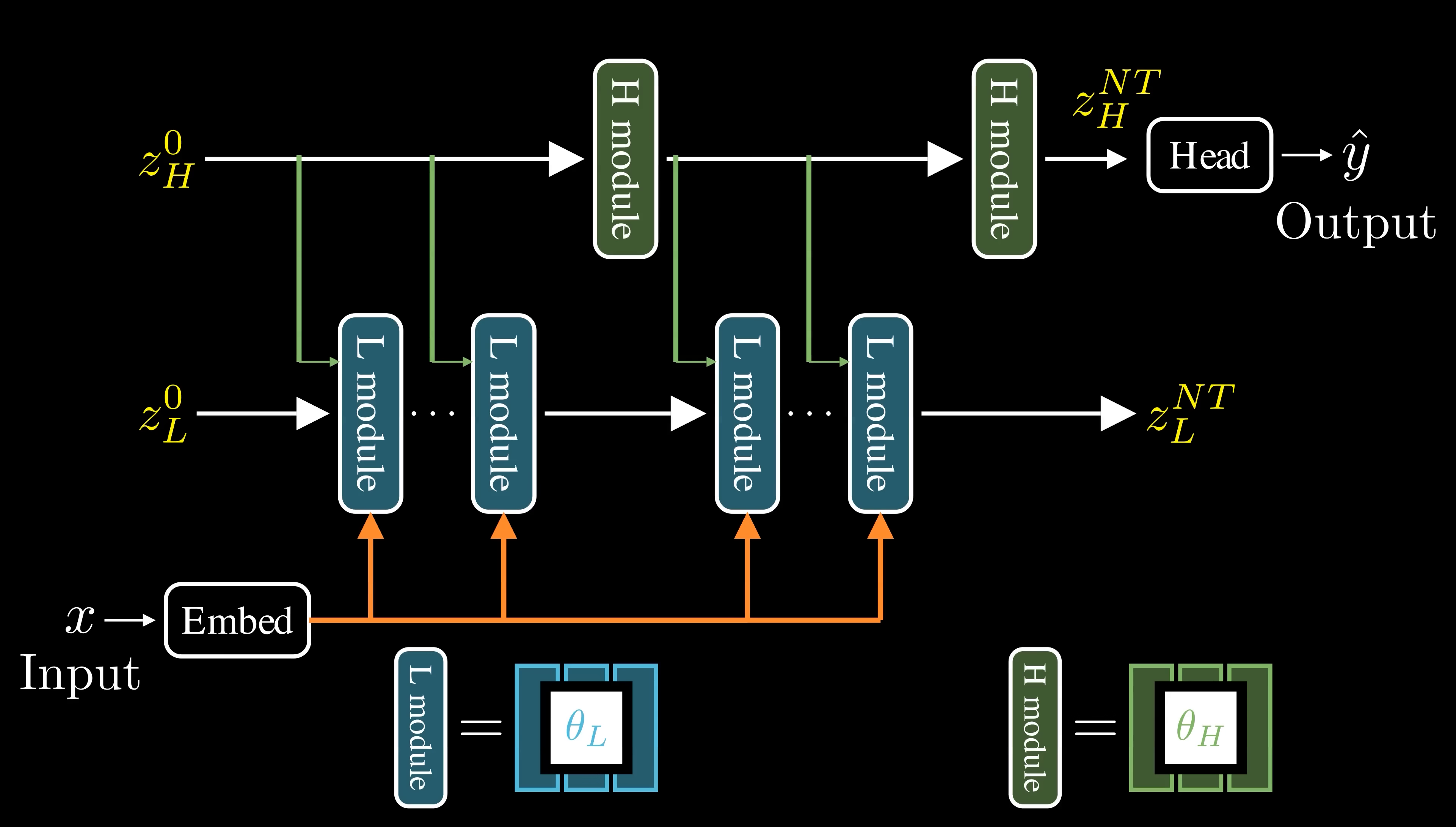Importantly, ZH remains unchanged throughout a cycle of T low-level steps. After every T low-level steps, the H module updates its states using the final state of the lower module from that cycle.